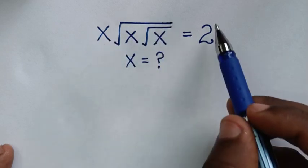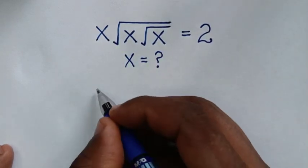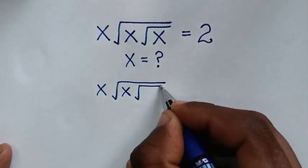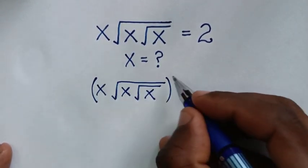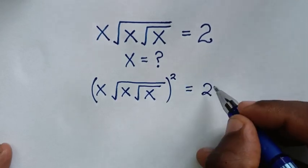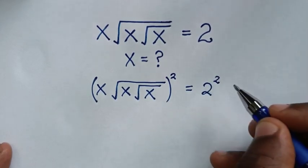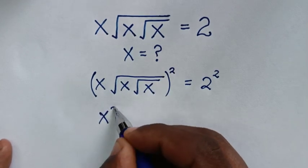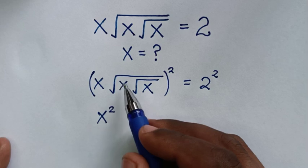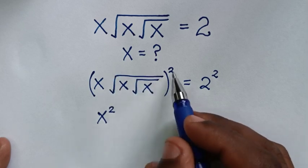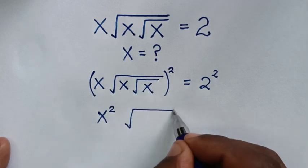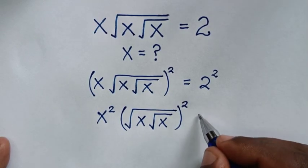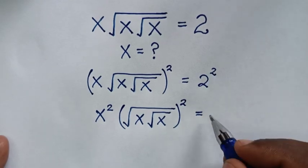So it will be x square root of x under square root of x — we square this side and we square the right side as well. Then we take this part of 2 inside the bracket, so it will be x squared, then times square root of x under square root of x, bracket squared, is equal to 2 squared which is 4.